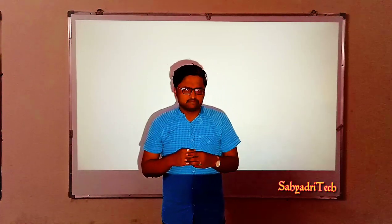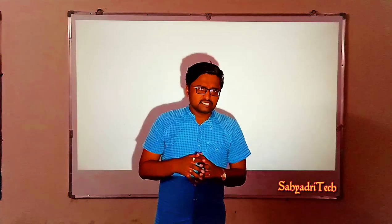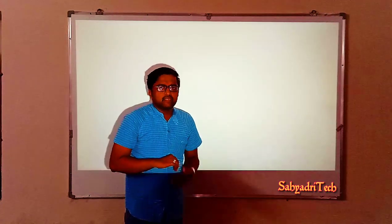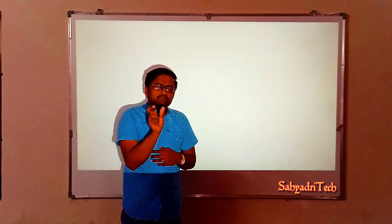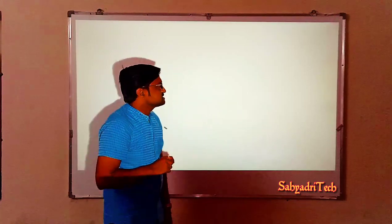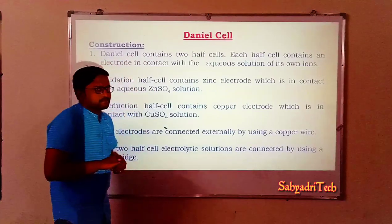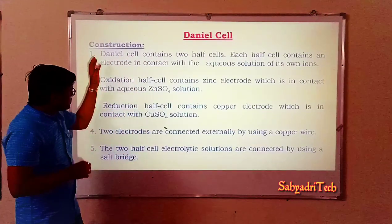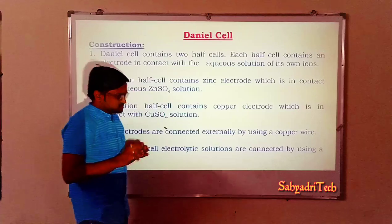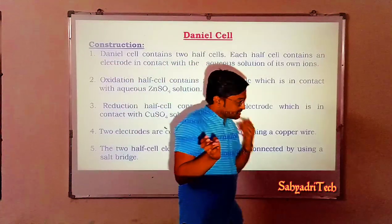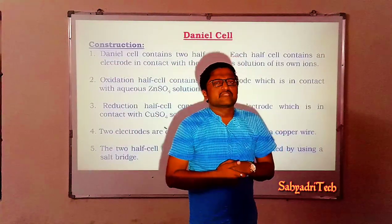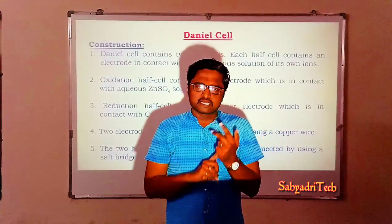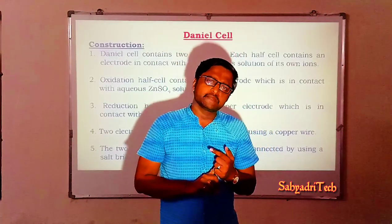In this session we discuss the construction and working of the Daniel cell, which is one of the simplest forms of a galvanic cell. In general, a galvanic cell contains two half cells, a salt bridge, a voltmeter, and connecting wires.